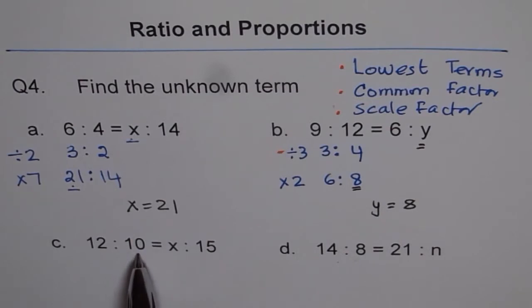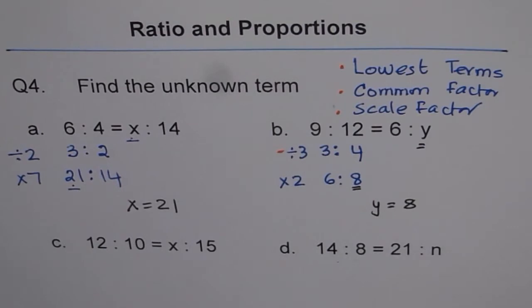Similarly here, 12 is to 10. You can't get 15 from 10 directly. 10 times 1 is 10, 10 times 2 is 20. So it is in between. So better thing is to divide them by common factor and then use scale factor. That is how you are going to do it.